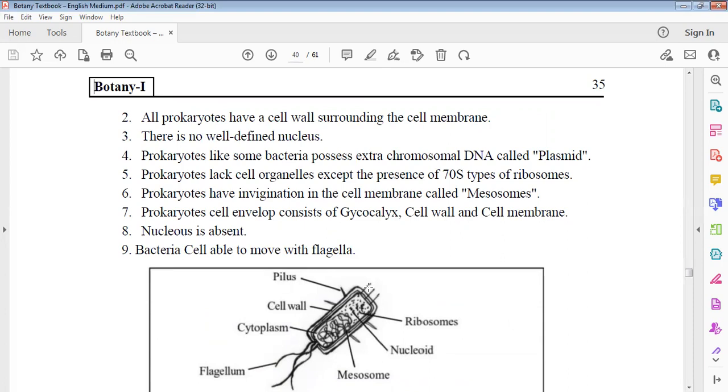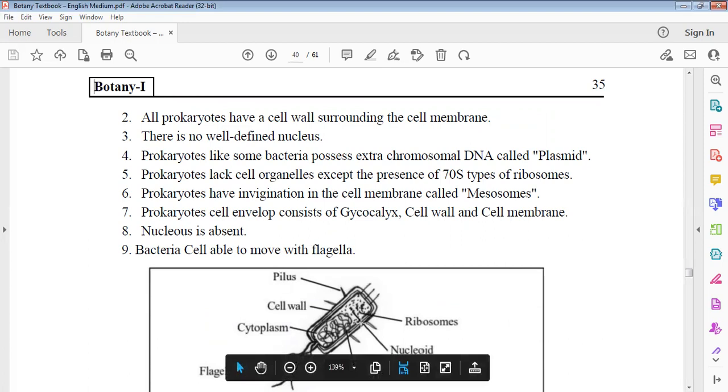Nucleus absent. Bacterial cells can be able to move with flagella, which is made up of a protein called flagellin. Pili is pilin. Fimbriae has a hard surface, rocks attached. Cell wall, cytoplasm, nucleoid, ribosomes.